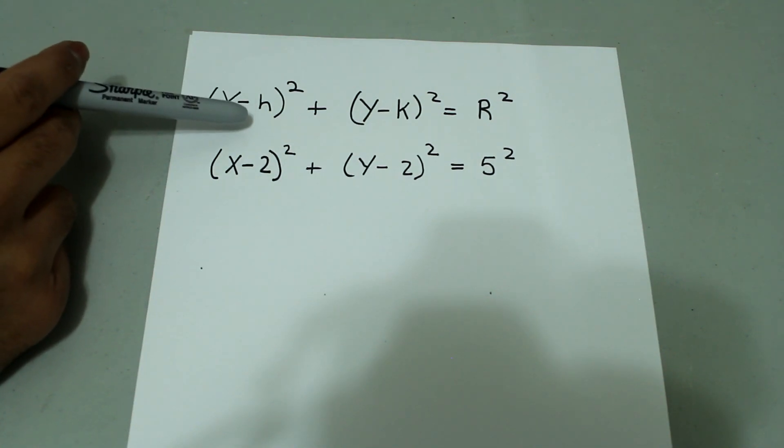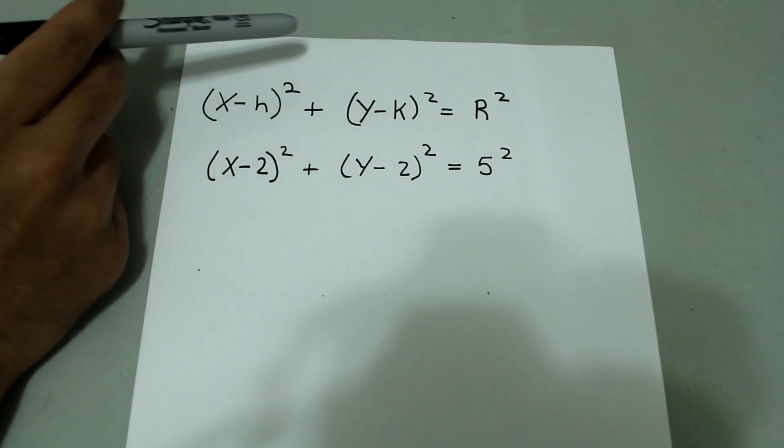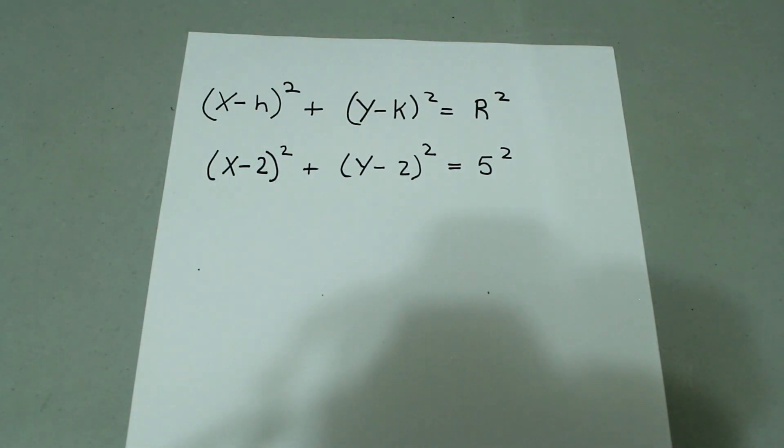and the value of h tells you which way you are shifting it along the x-axis and the value of k tells you which way you are shifting it along the y-axis.